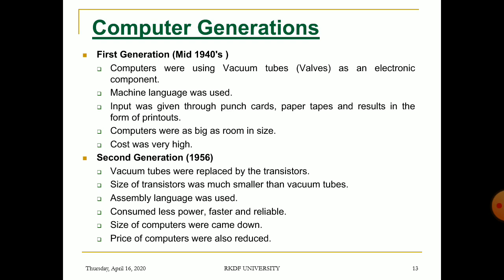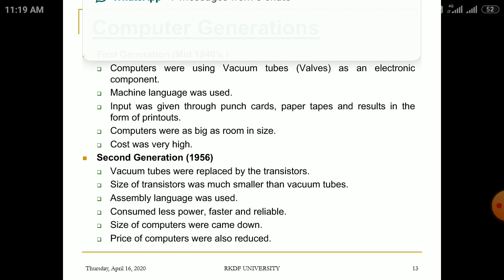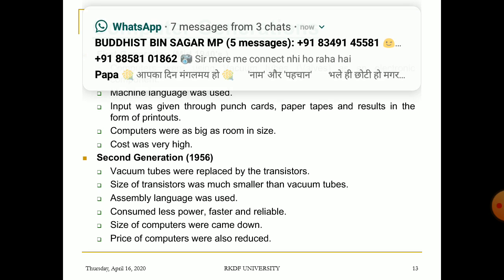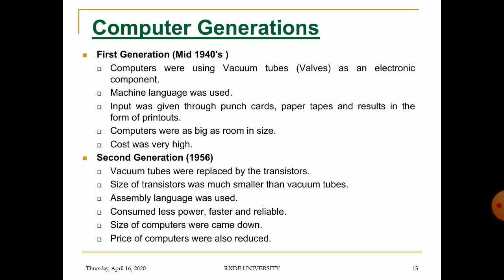First generation computers used machine language. They were bigger in size and required more space. They consumed a large amount of energy, produced a lot of heat, were non-portable, had very high cost, and very slow speed.